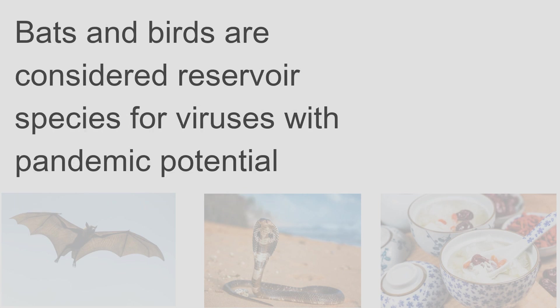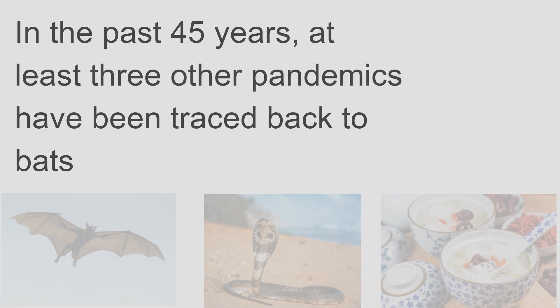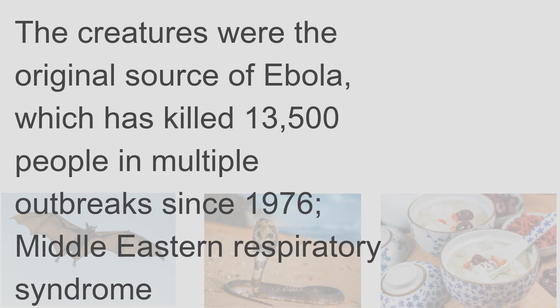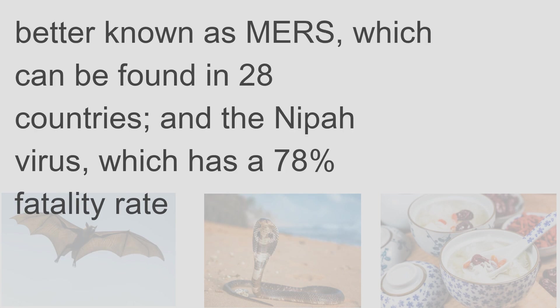Bats and birds are considered reservoir species for viruses with pandemic potential. In the past 45 years, at least three other pandemics have been traced back to bats. The creatures were the original source of Ebola, which has killed 13,500 people in multiple outbreaks since 1976; Middle Eastern Respiratory Syndrome, better known as MERS, which can be found in 28 countries; and the Nipah virus, which has a 78% fatality rate.